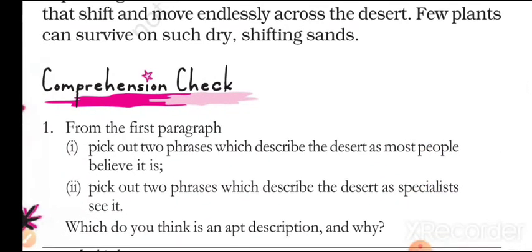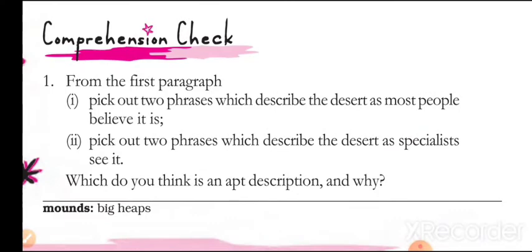Comprehension check from the first paragraph. Question number one: Pick out two phrases which describe the desert as most people believe it is. The following two phrases describe the desert as most people see it: one, 'an endless stretch of sand,' and two, 'dry, hot, waterless lane and without shelter.' You can find these in the first paragraph. Now pick out two phrases which describe the desert as specialists see it.